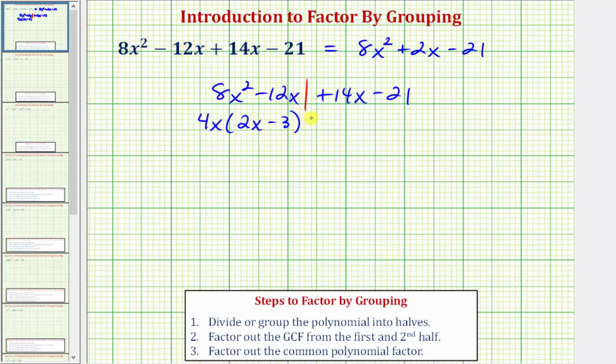Now we factor the greatest common factor out of the second half. The greatest common factor of 14x minus 21 is seven. Because we'll be factoring out a positive seven, we'll write plus seven times the quantity 2x minus 3.